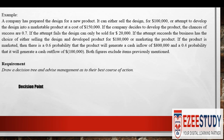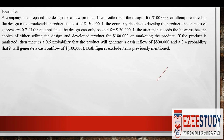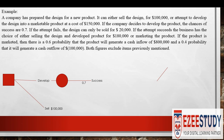When developing a decision tree, we denote these two types of points with symbols: the decision point is shown as a square, whereas the chance point is shown as a circle. Let's now draw the decision tree to help the company decide its course of action. According to the question, the company has two choices at the start.